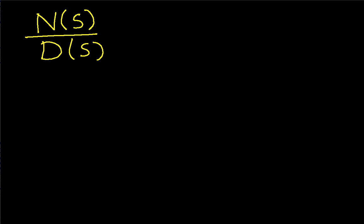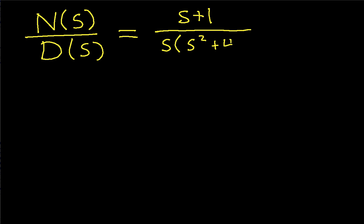To illustrate the idea behind pole-zero plots, let's put in a couple of specific polynomials. Suppose, for the sake of example, that our numerator is s plus 1, and our denominator is s times s squared plus 4s plus 13.